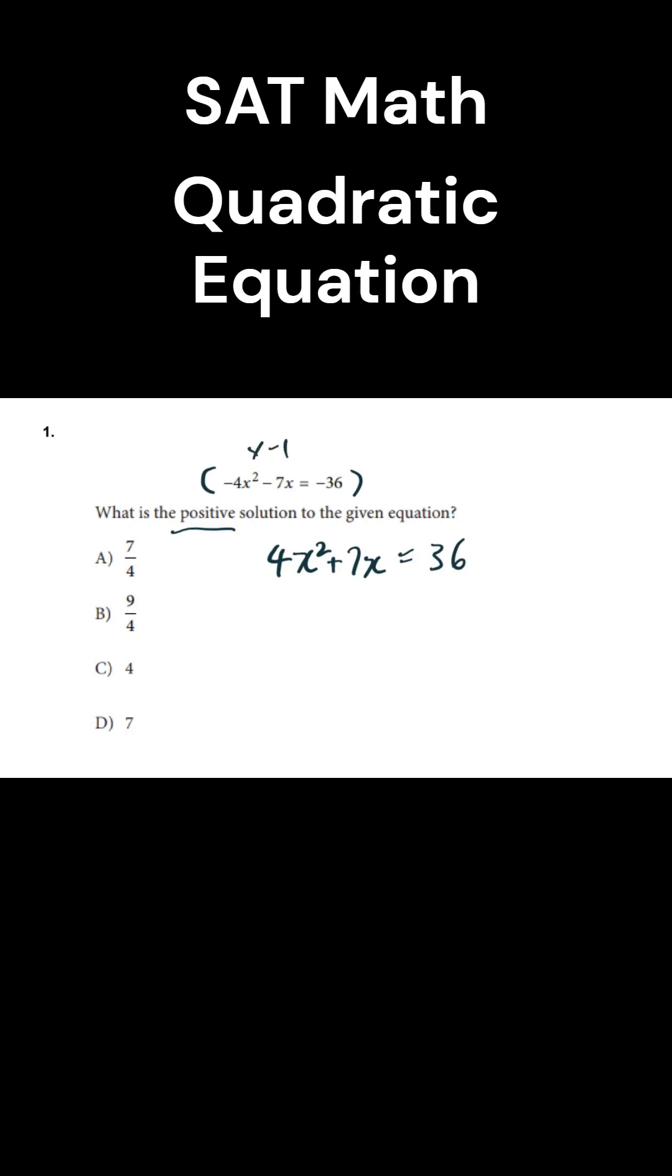By multiplying each side by negative one, and then we can bring the 36 to the other side, making this good-looking quadratic equation. Now what we should do is look for